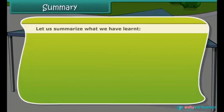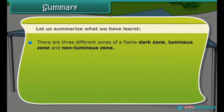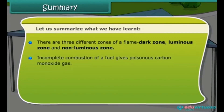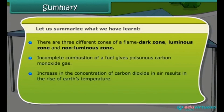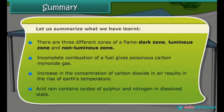Let us summarize what we have learned. There are three different zones of a flame: dark zone, luminous zone, and non-luminous zone. Incomplete combustion of a fuel gives poisonous carbon monoxide gas. An increase in the concentration of carbon dioxide in air results in a rise in Earth's temperature. Acid rain contains oxides of sulfur and nitrogen in dissolved state.